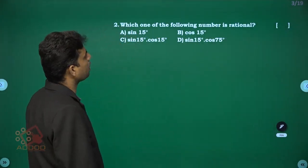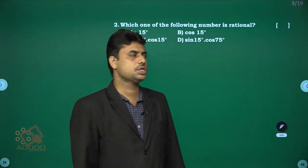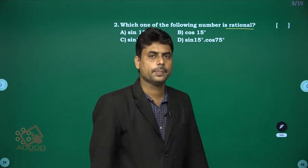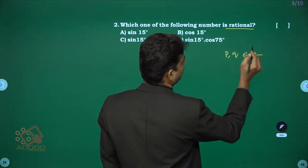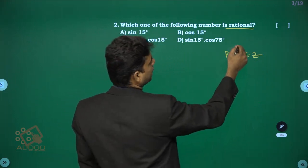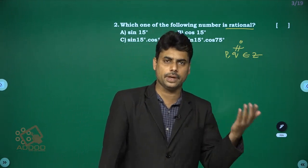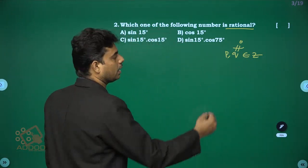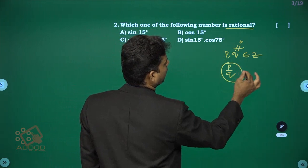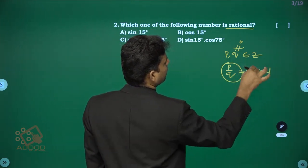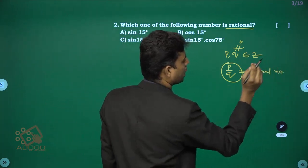Second question: which of the following numbers is rational? A rational number is any number that can be written in the form p/q where p and q are integers and q ≠ 0. A number not expressible in this form is called irrational.